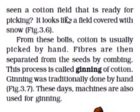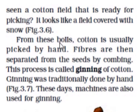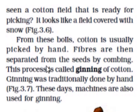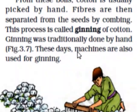Have you ever seen a cotton field that is ready for picking? It looks like a field covered with snow. From these bolls, cotton is usually picked by hand. Fibers are then separated from the seeds by combing. This process is called ginning of cotton. Ginning was traditionally done by hand, but these days machines are also used.